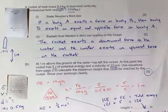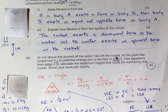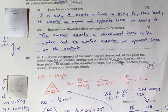This question with five marks I did in red because I just want to show you where you can go wrong. It says at one meter above the ground all the water has left the rocket, so there's no more water. At this point the rocket has 5 joules of potential energy, so that's stored energy, and a velocity, so it's moving at a speed of 22 meters per second. Use equations—it's going to be more than one equation because it's five marks.